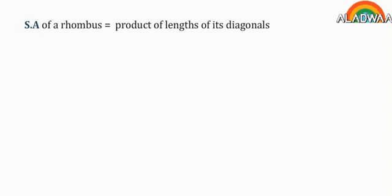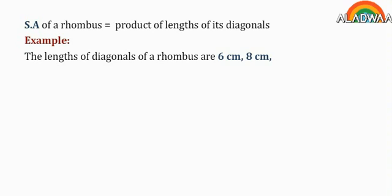Surface area of a rhombus equals half the product of length of its diagonals. Example: The lengths of diagonals of rhombus are 6 cm and 8 cm. Find its surface area.